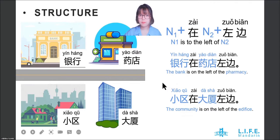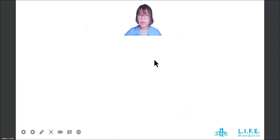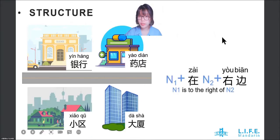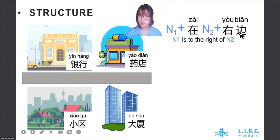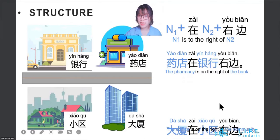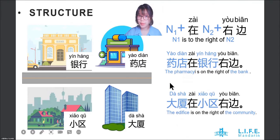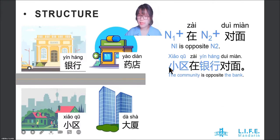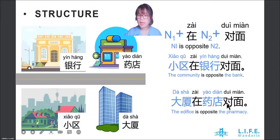Similarly, we just change 左边 to 右边. We can say 药店在银行右边 (the pharmacy is to the right of the bank), and 大厦在小区右边 (the building is to the right of the compound). We can also use 对面: 小区在银行对面, and 大厦在药店左边.